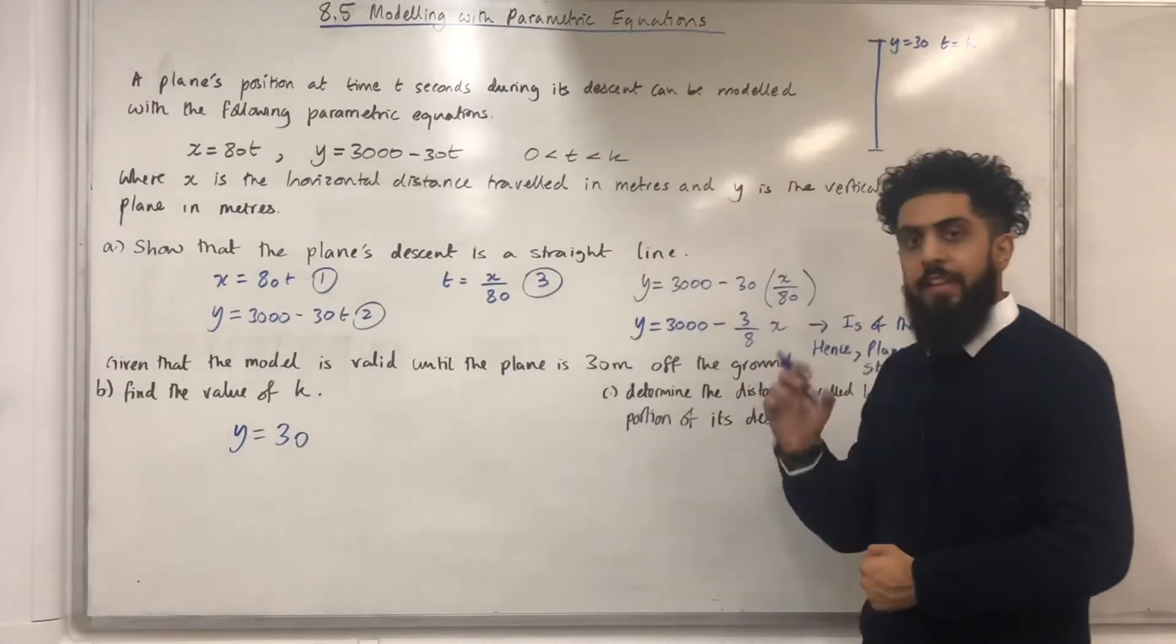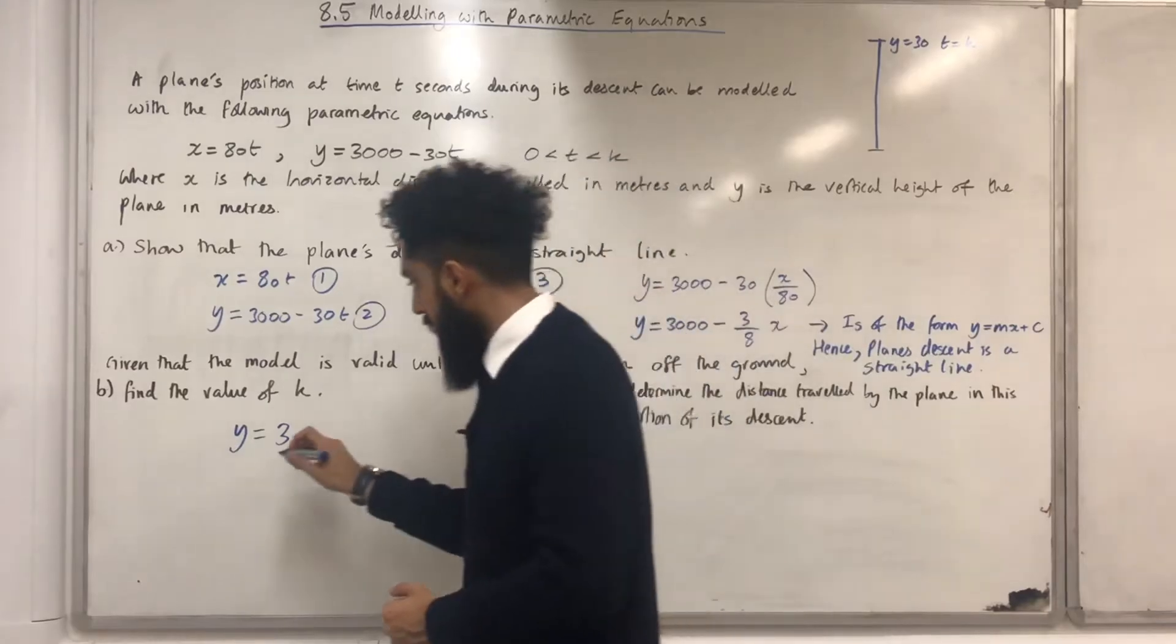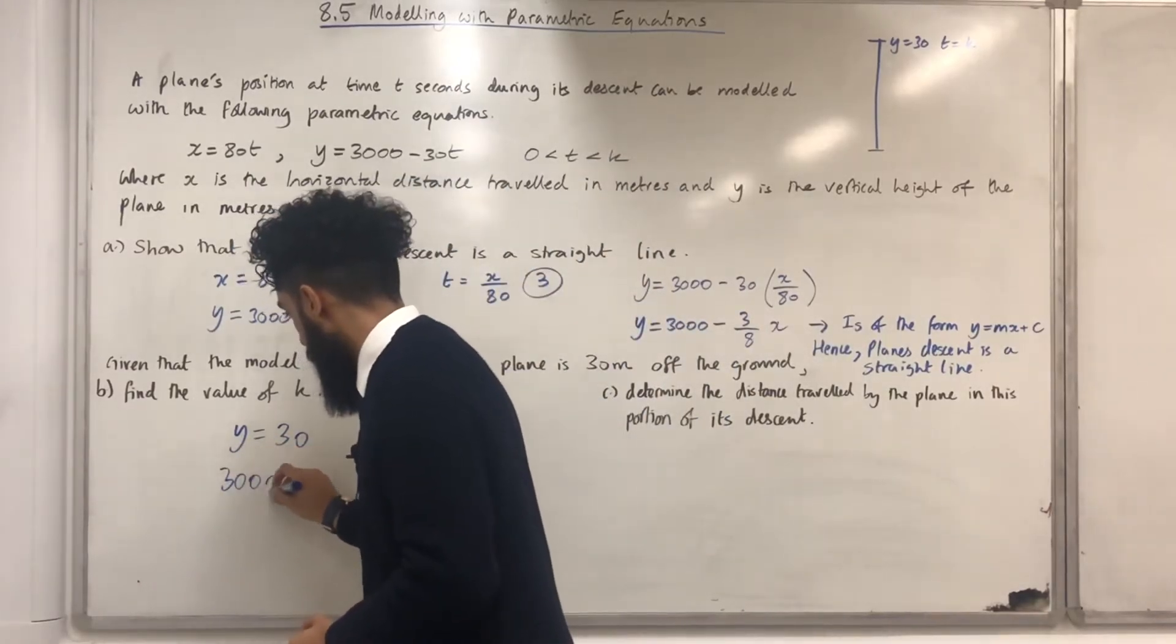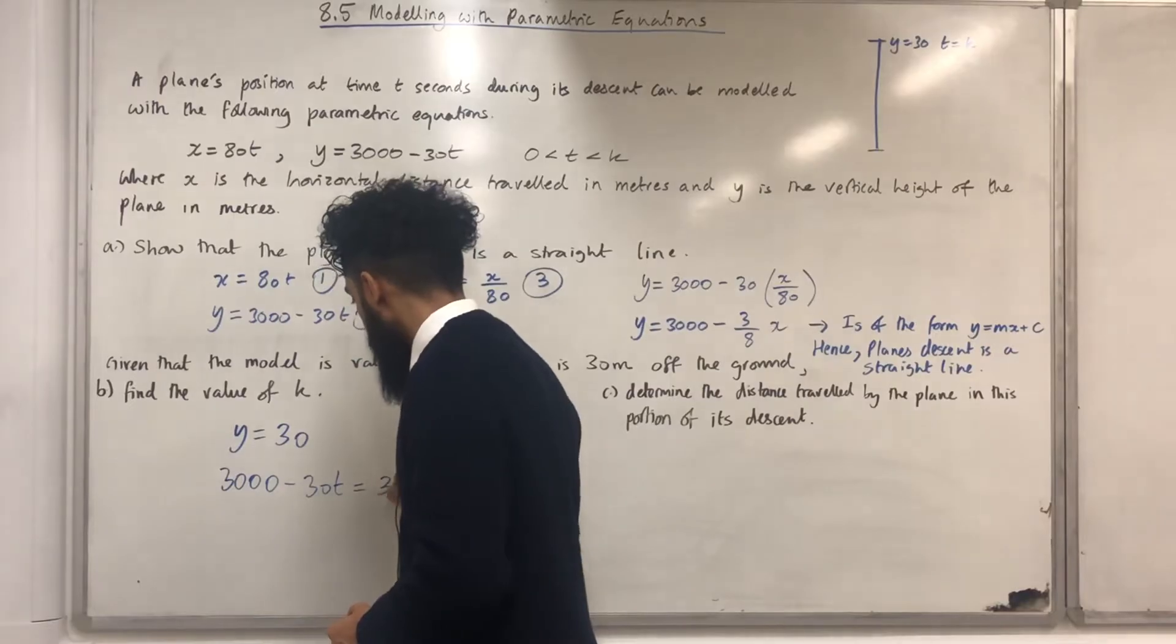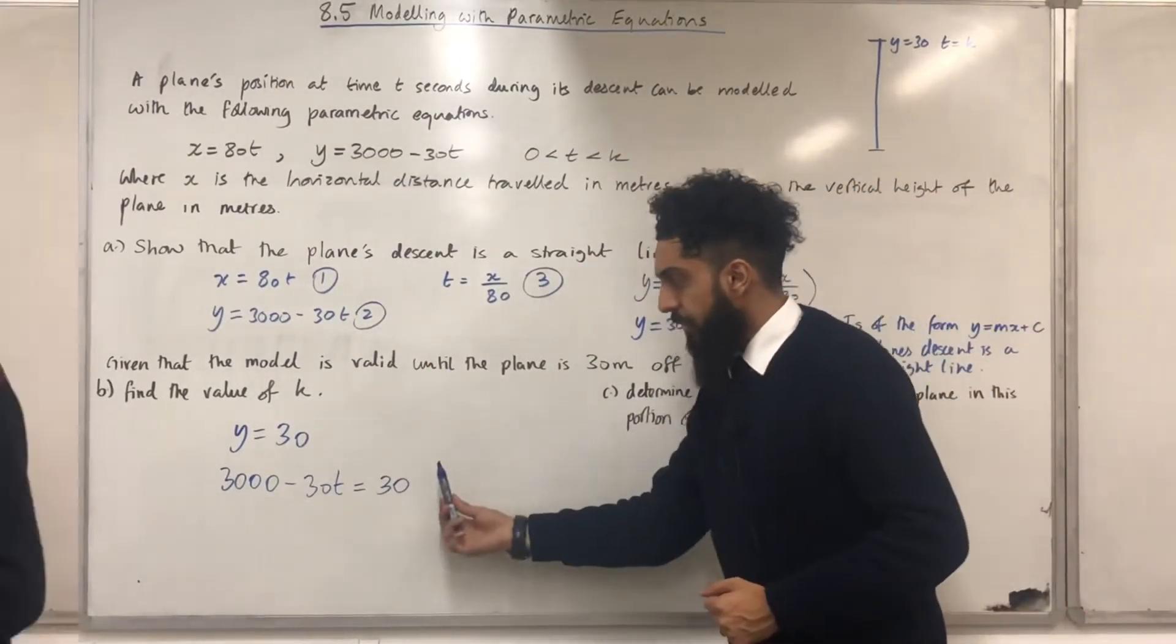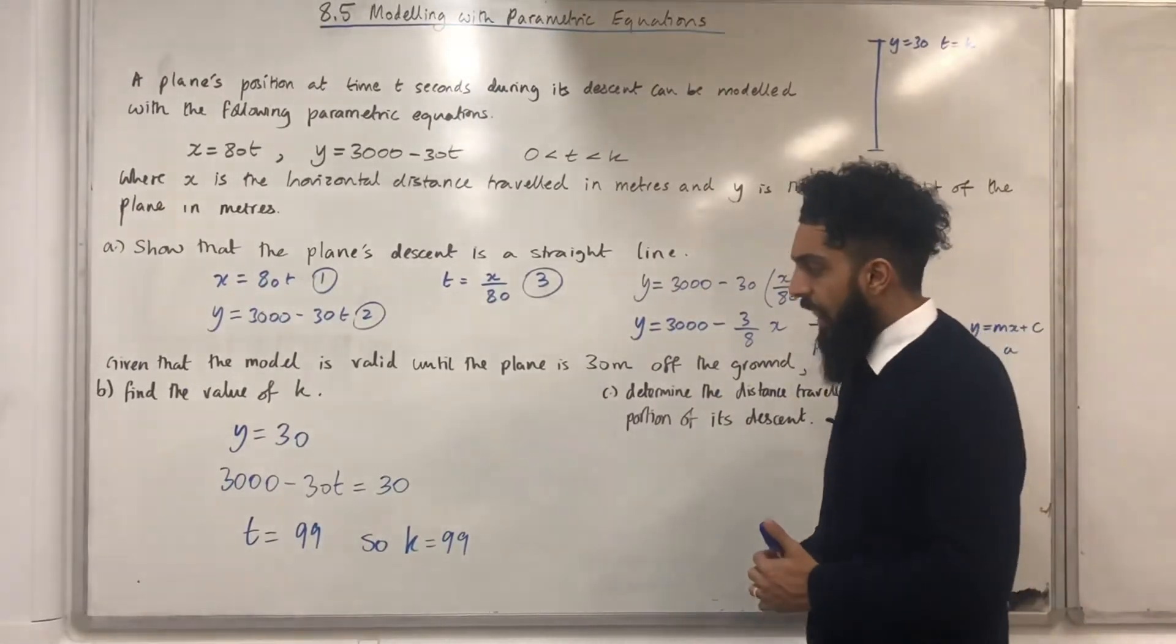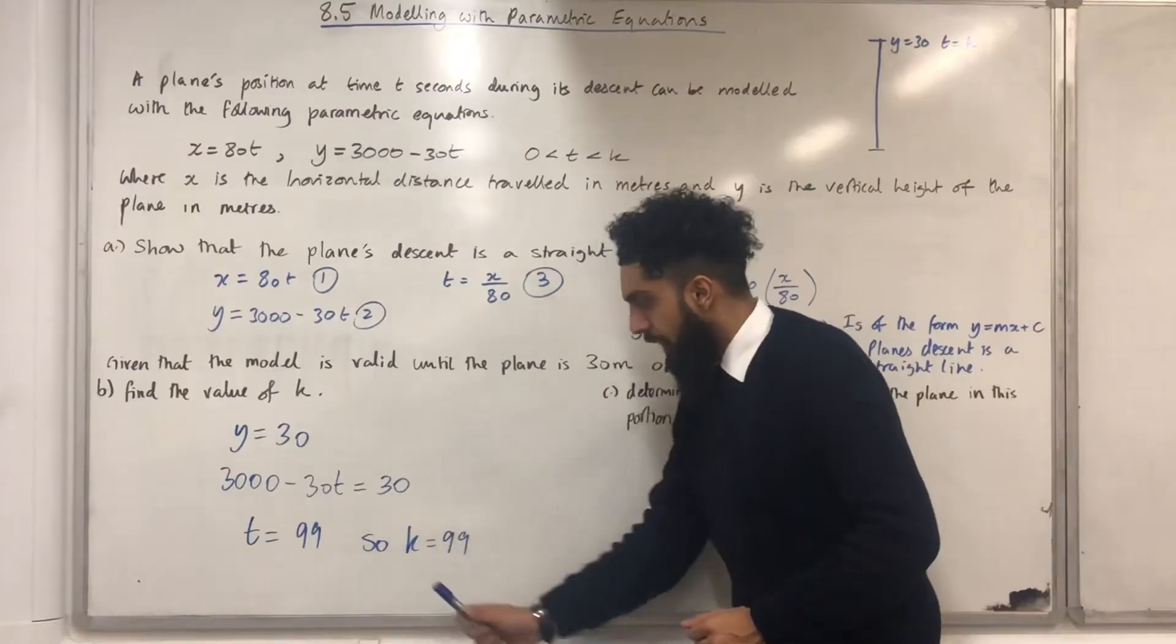My next step is to replace the y with 3000 minus 30t. All I need to do now is make t the subject. After making t the subject, I get t equal 99, hence k equals 99.